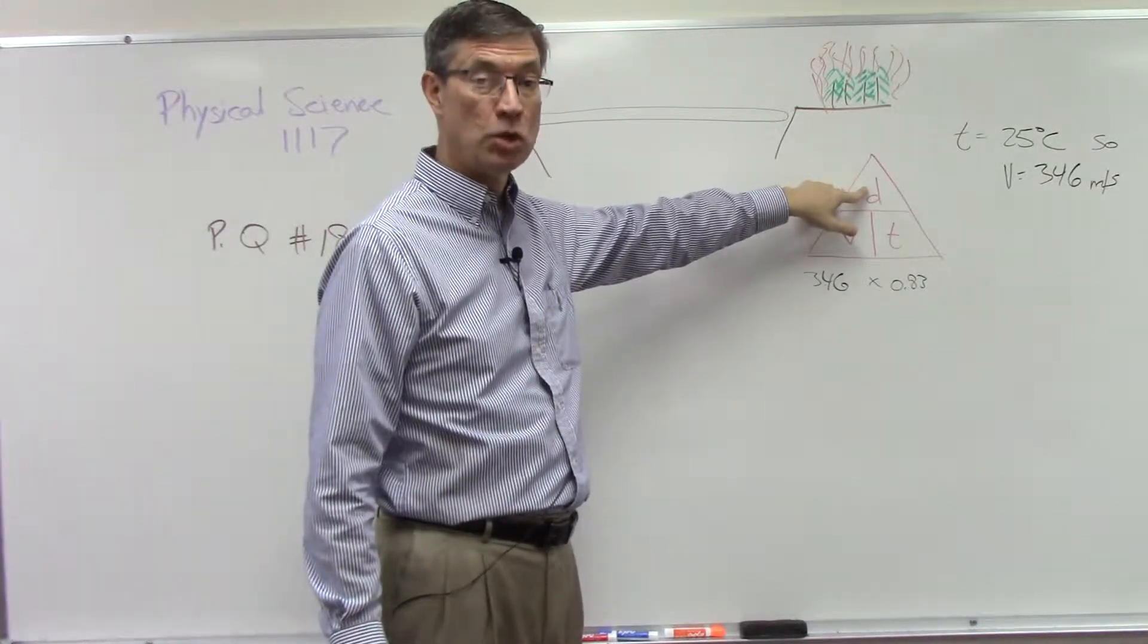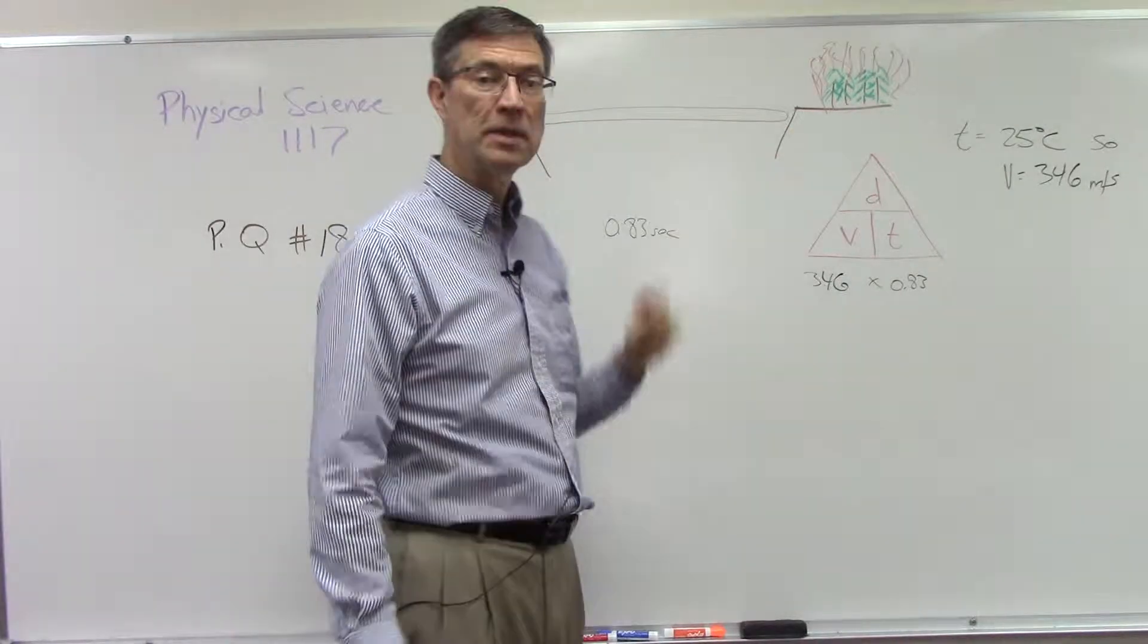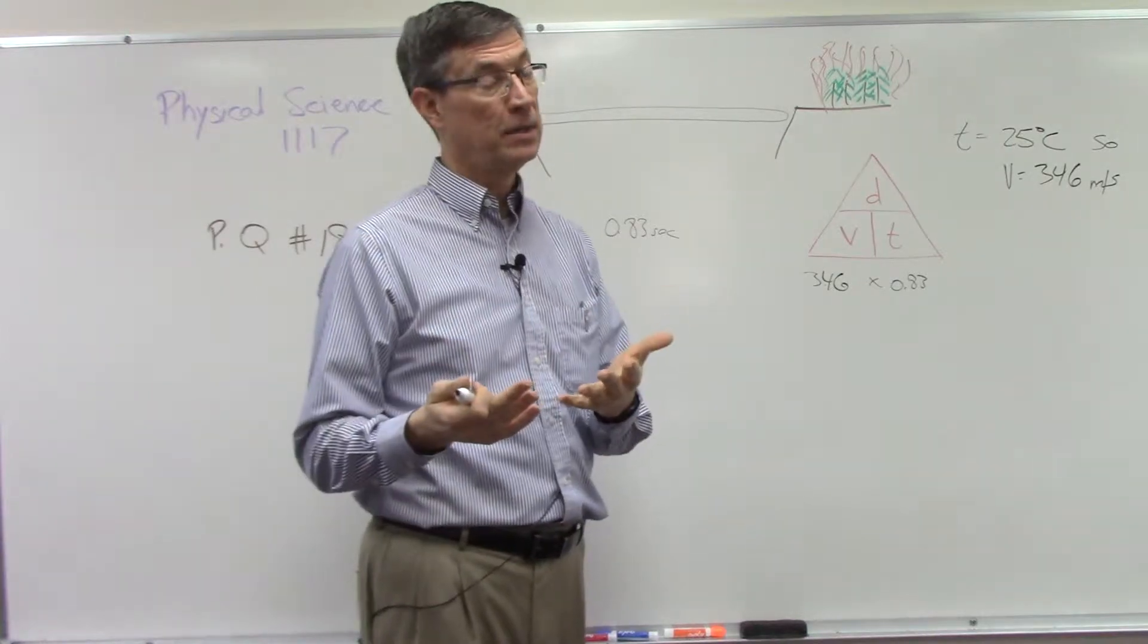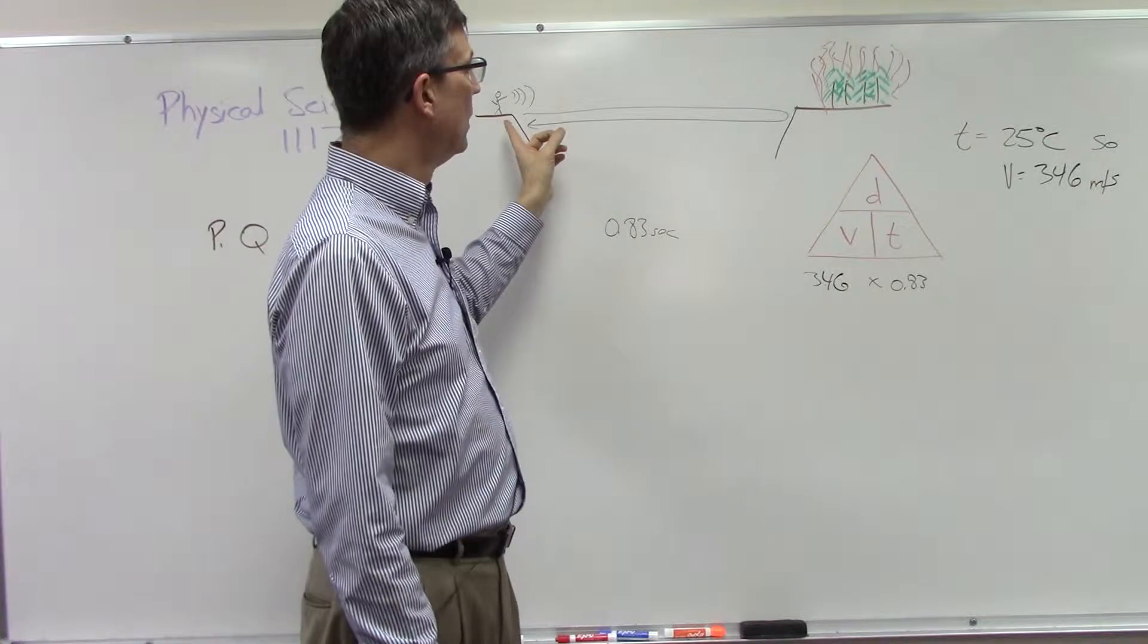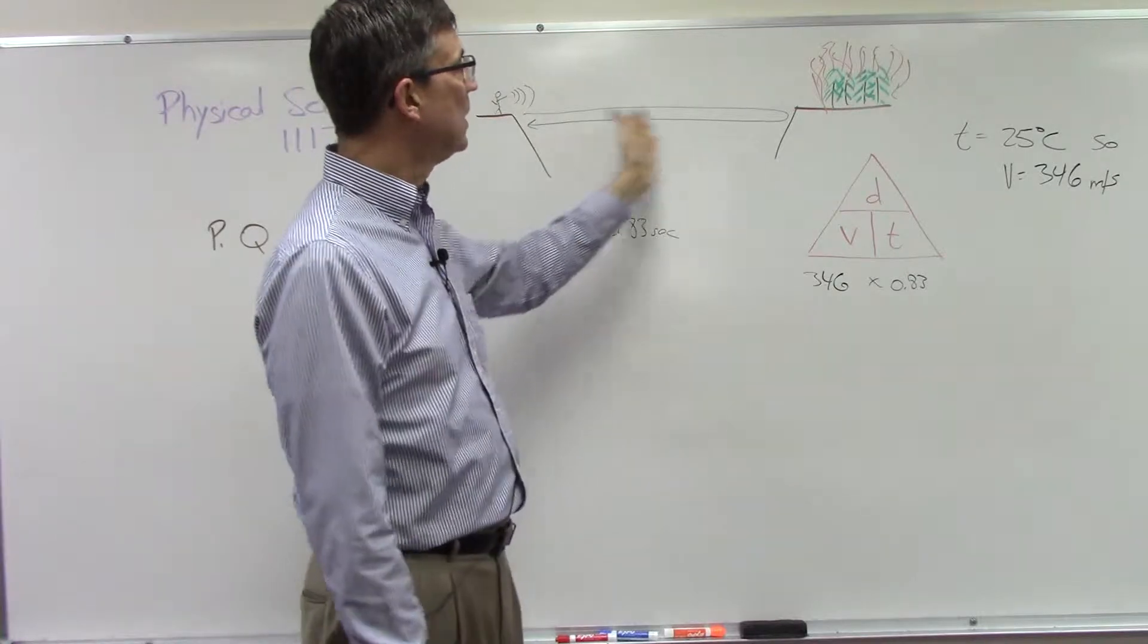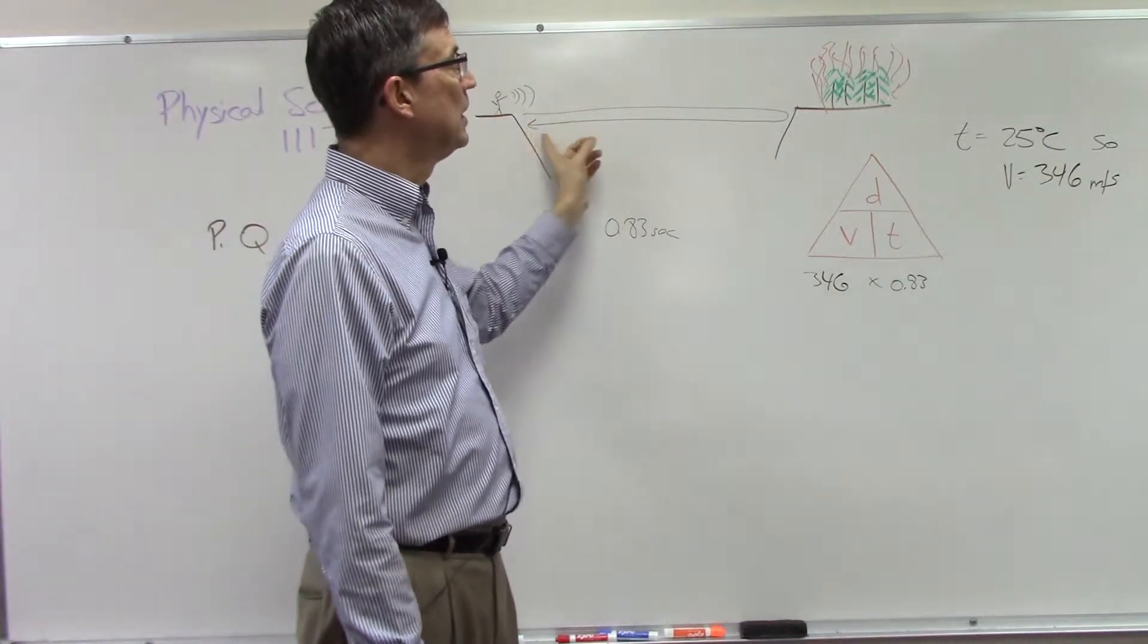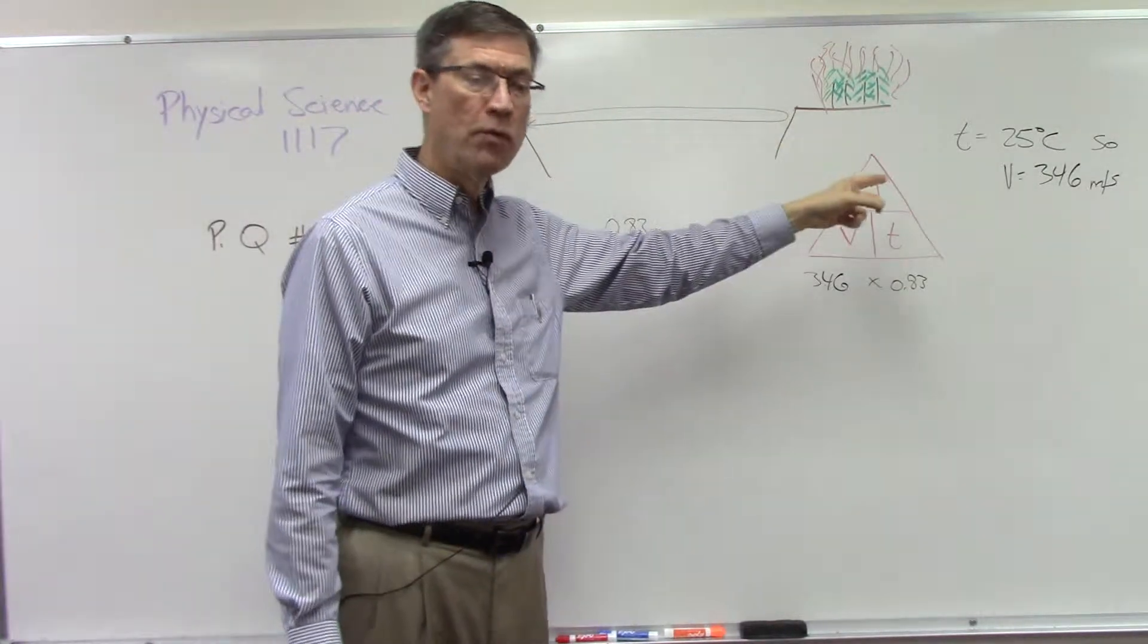Because the distance across the canyon is half the distance that the echo traveled. Now in the two problems before that, it gives you the distance across and then it wants you to find the time that it takes for the echo to return or something like that. So you have to remember to take the distance and multiply it times two, because the echo has to travel over and back again.